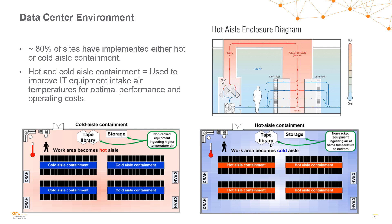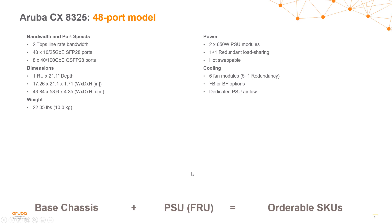When we're building out our data center environments, we need to understand the airflow that is required within this particular environment, and that's going to vary from environment to environment. The airflow is usually described as hot aisle or cold aisle. You can see here on the lower left, this is a cold aisle solution where the cold air actually enters into the back of the switch, passes through the switch, and goes out the front — what we call a back-to-front airflow solution. The solution on the right is a hot aisle containment, where the cold air goes in the front of the switch and out the back — a front-to-back airflow solution. So make sure you understand the airflow requirements in the particular solution.